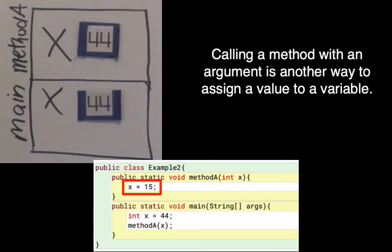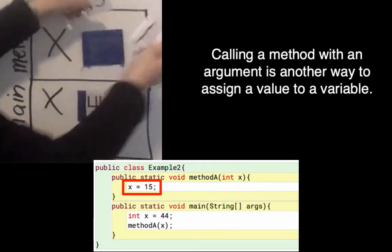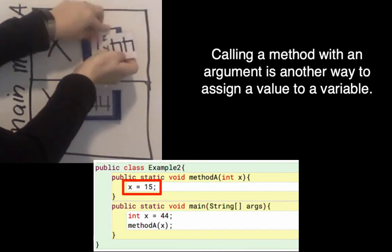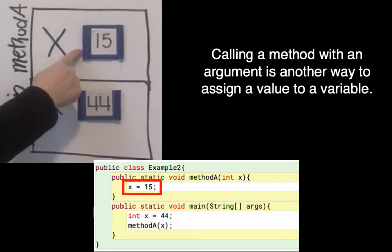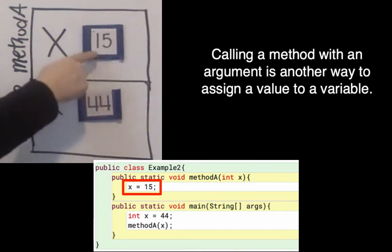So in there it says x gets 15. So what that means is I'm inside of methodA, and I changed the value of x from 44 to 15. And it's important to remember that inside methodA, when I changed that x, it didn't change my other x. They didn't become linked or anything. And even inside of methodA, I can only access the local variables that I've listed here.